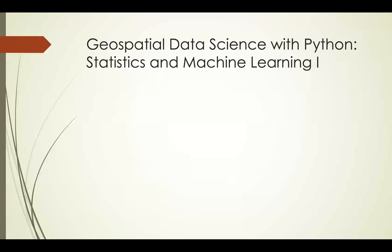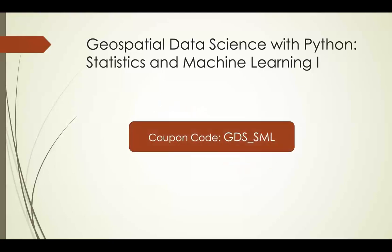I'm going to go over a lot of information about what this course is about and what's in it, but if you're just here for the coupon code, there it is. You can go to Udemy, look up this course, use the coupon code at checkout before Friday, February 19th, and you'll be able to get this course as well as its prerequisite, Geospatial Data Science with Python, Geopandas, for $9.99 or maybe less in your country.